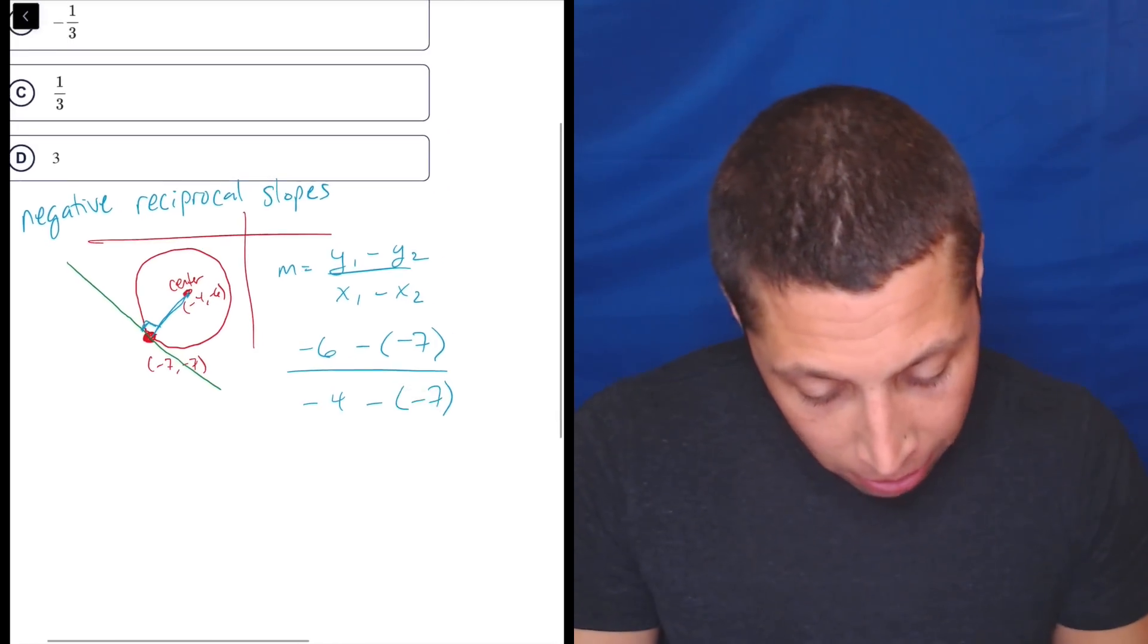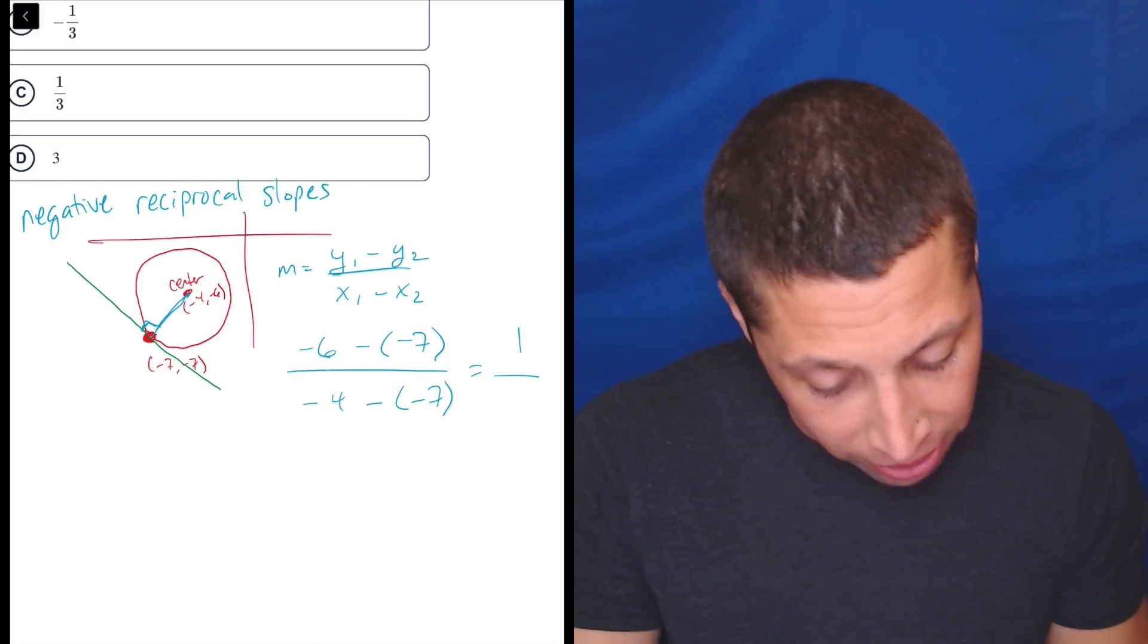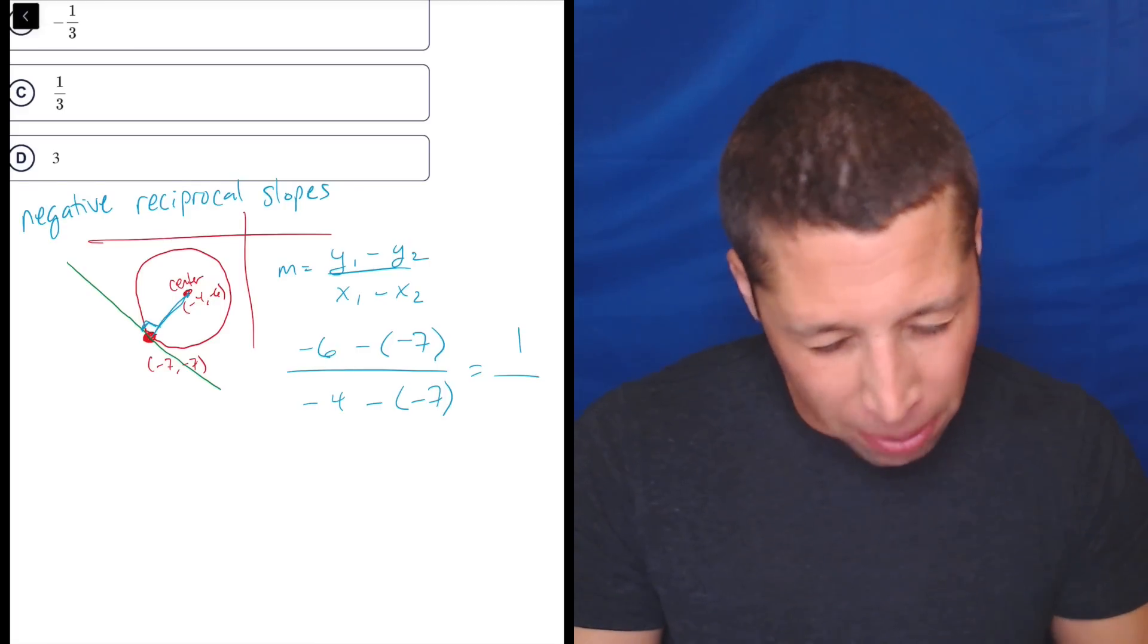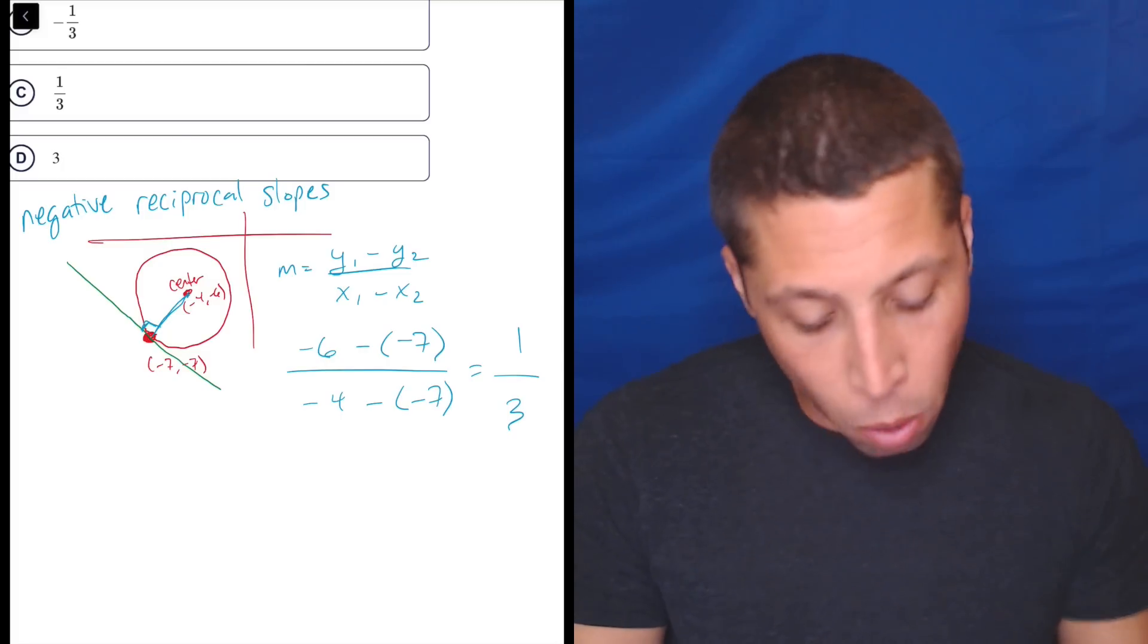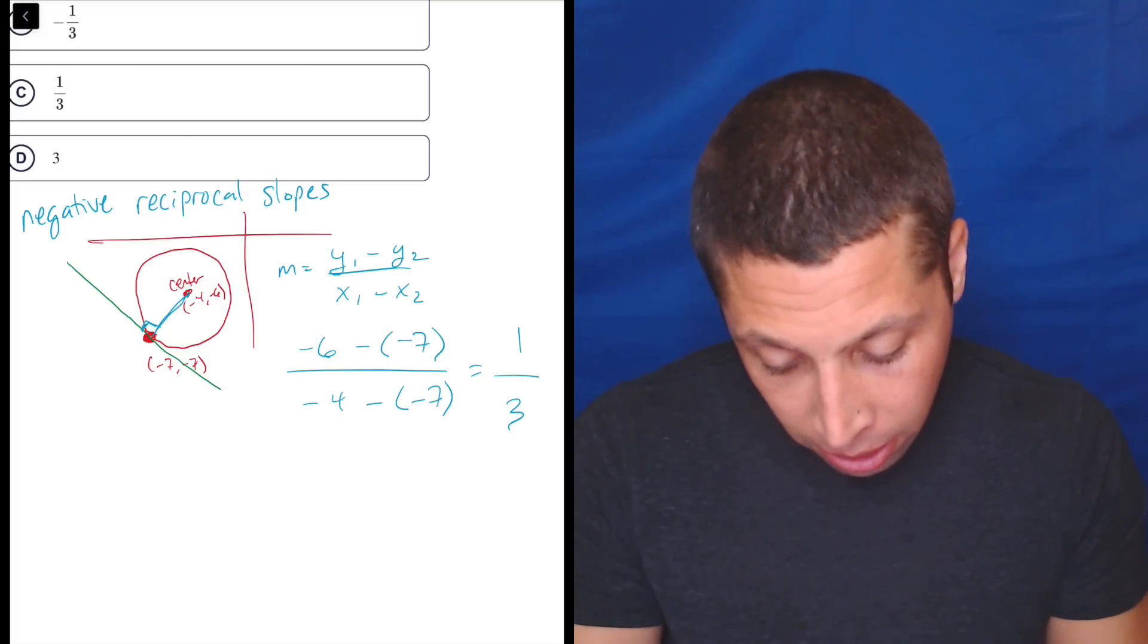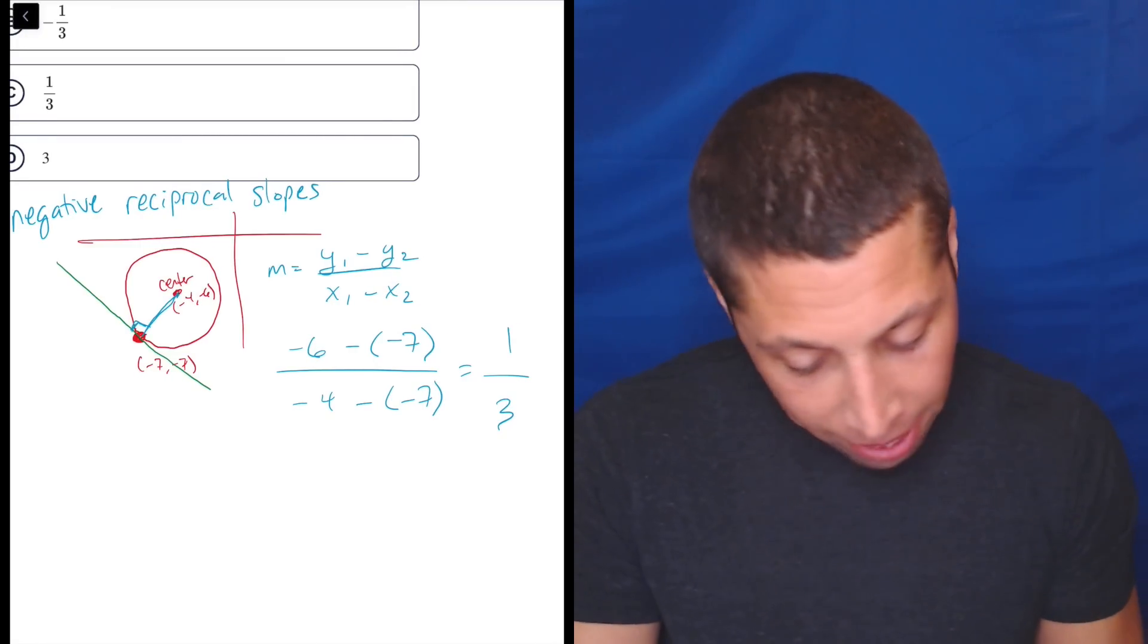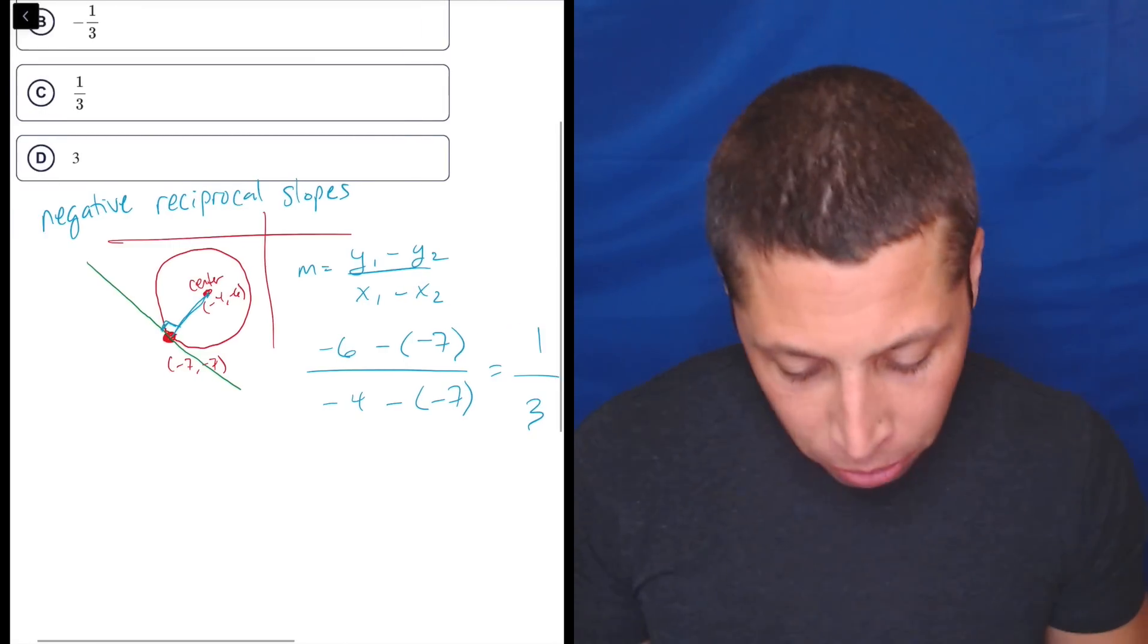So that's now pluses. So negative six plus seven, negative six plus seven is one. I'm very worried about those negatives. Negative four plus seven, seven minus four is three. So one third is the slope of this radius line.